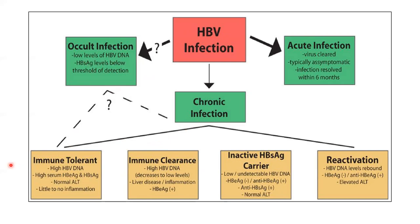Chronic infection goes through three or four phases, classically described as a five-stage model. In the immunotolerant phase, the cell is actively replicating with high HBV DNA levels and high EAG and SAG levels, but there is no inflammation because the immune system has not yet acted. The approximate duration of this phase is about 10 years.